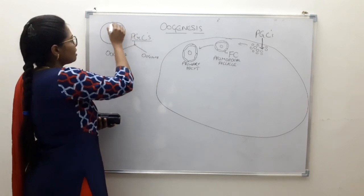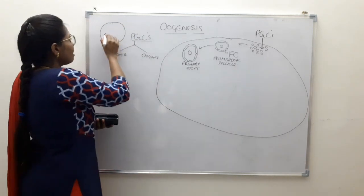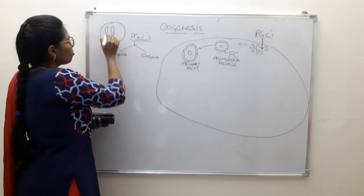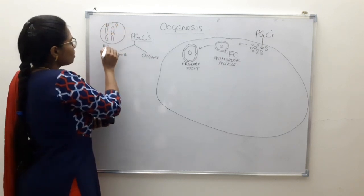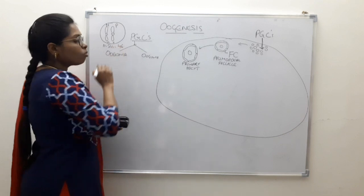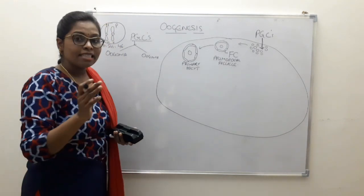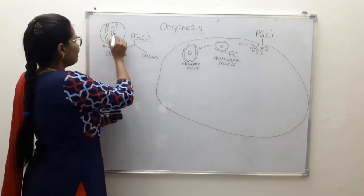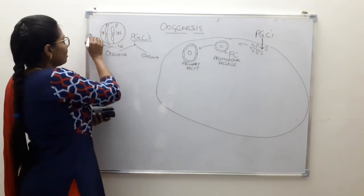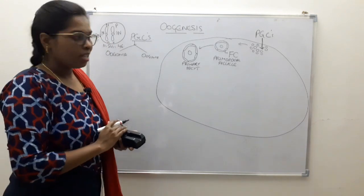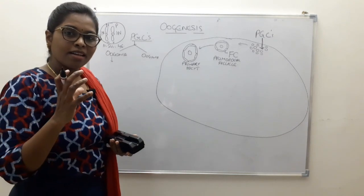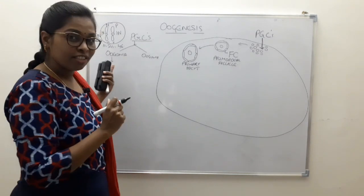Just like in spermatogenesis, the primordial germ cells have 23 maternal and 23 paternal chromosomes, giving a total of 46 (2N). The genetic material is 2N. Now, as the oogonium gets ready for division — it swells up to form the primary oocyte — the chromosomal number remains constant at 46, but the genetic material doubles to 4N, as it must double before division.